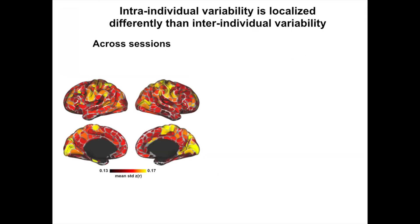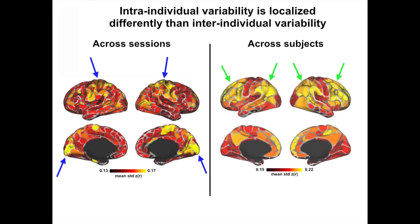Interestingly, if we look directly at the standard deviation of the correlation estimates across days, there is increased variability in visual and somatomotor regions. This pattern of within-subject variability is in clear contrast to across-subject variability, which is concentrated in frontal and parietal regions. These differences speak to the different sources of variability between, as opposed to within, subjects.